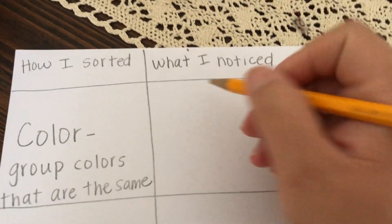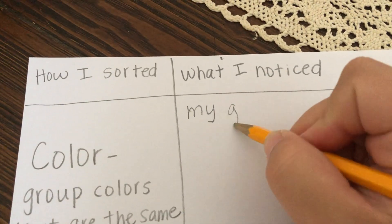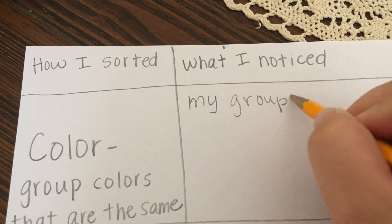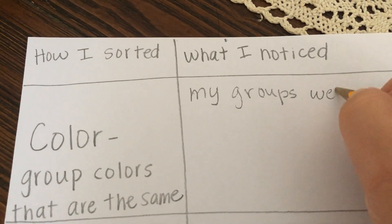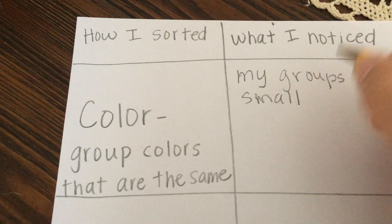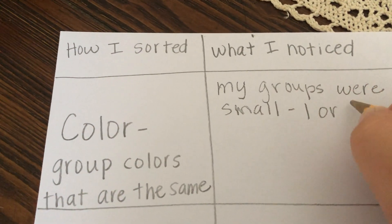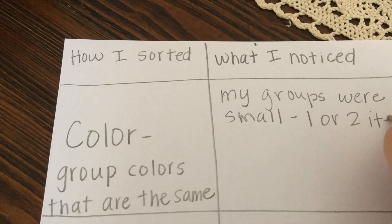I think I'm just going to write my groups were small. And then I'm also going to say one or two items in each group.